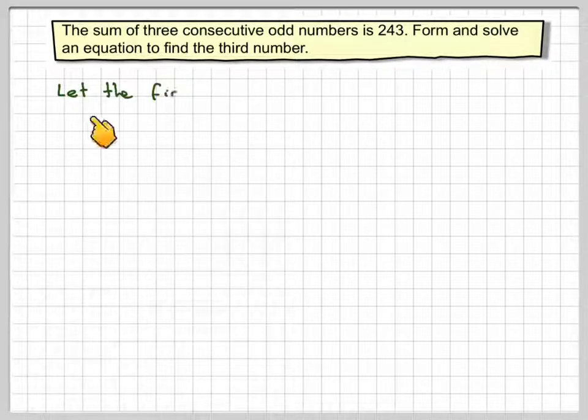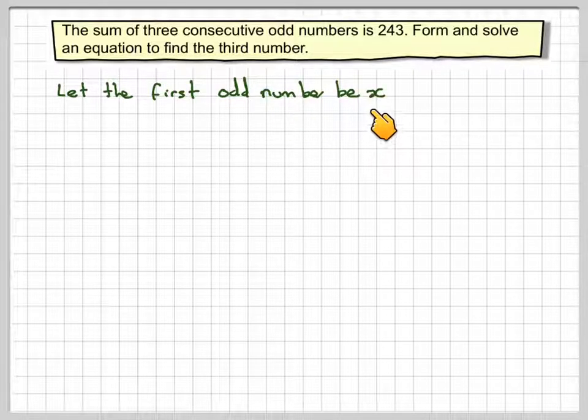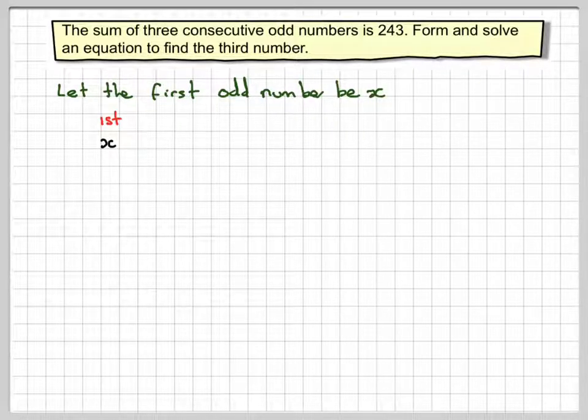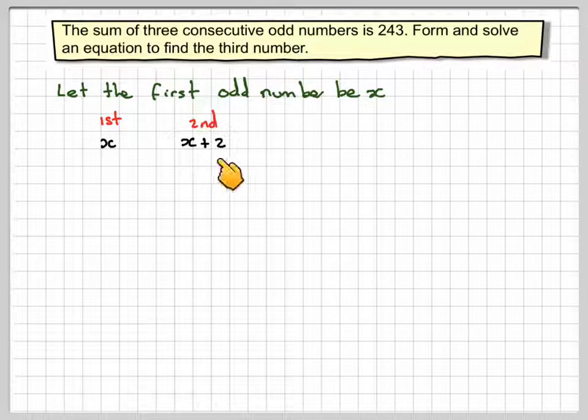So let the first odd number be x. The first number is x. The second one will be 2 along, because odd numbers occur every 2 along. So the second one will be x plus 2.